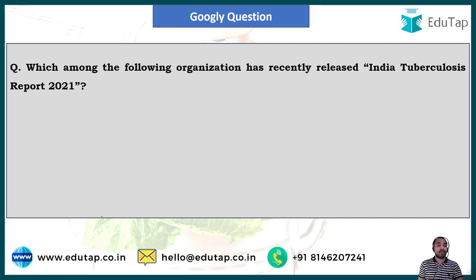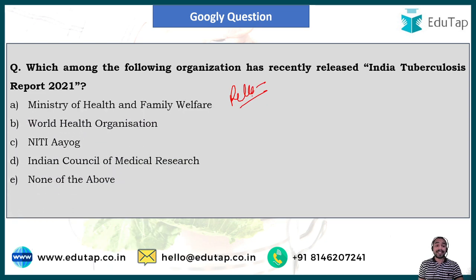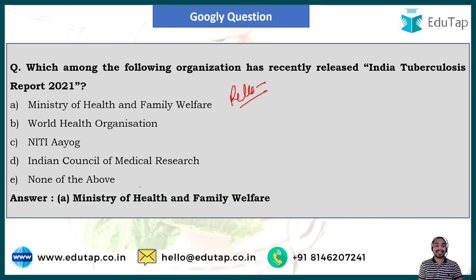The googly question: Which organization recently released the India Tuberculosis Report 2021? The options are Ministry of Health and Family Welfare, World Health Organization, NITI Aayog, Indian Council of Medical Research, or none of the above. The correct answer is option A — Ministry of Health and Family Welfare.